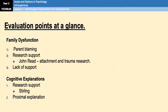So you've had quite a lot of evaluation points. Just to put them all at a glance, this is the order I would learn them in. I would definitely learn the parent-blaming evaluation point and the research support by John Reed. If you don't want to learn the lack of support point, that's fine — it's not the end of the world. For cognitive explanations, start with research support, and the proximal explanations point is optional. As a general rule you need three or four evaluation points — ideally two for each explanation.